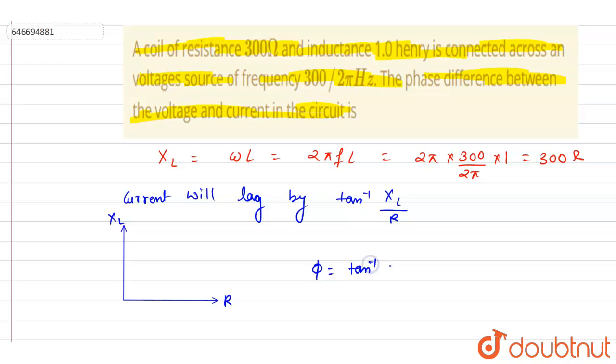It will be tan inverse of 300 by 300, that is tan inverse 1, that is pi by 4. And this is the answer of this question.